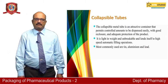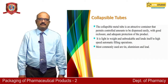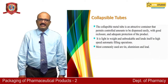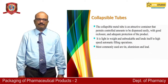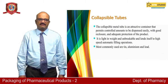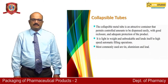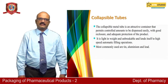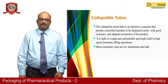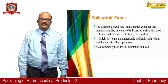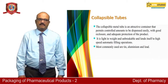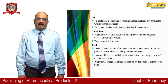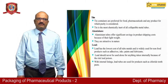Collapsible tubes are available for the packaging of ointments or creams. These collapsible metal tubes are attractive containers which permit a controlled amount to be dispensed easily with good reclosure and adequate protection of the product. They are light in weight, unbreakable, and lend themselves to high speed automatic filling operations, enhancing productivity. The most commonly used collapsible tubes are made of tin, aluminium and lead. Tin containers are preferred for food, pharmaceuticals and any product for which purity is considered.